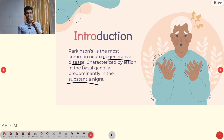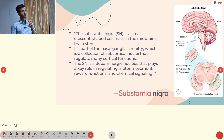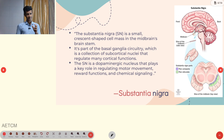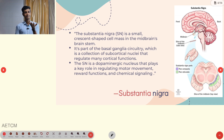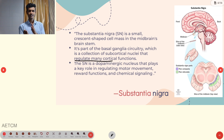Parkinson's disease is characterized by lesions in the basal ganglia, predominantly in the substantia nigra. It is a nerve degenerative disorder that makes a lesion in the substantia nigra. The substantia nigra is a small crescent-shaped cell mass in the brain stem that regulates many cortical functions.